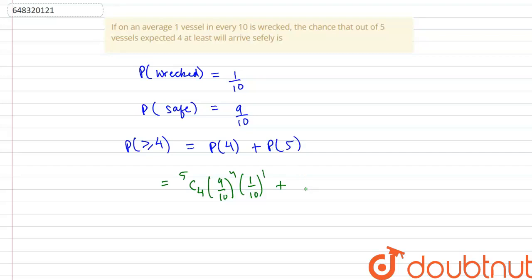Plus probability that all the 5 is safe. All the 5 are safe would be 9 by 10 to the power of 5.